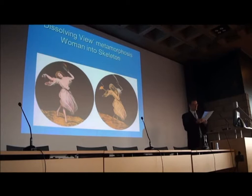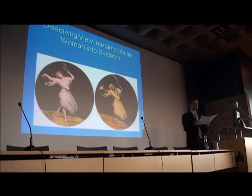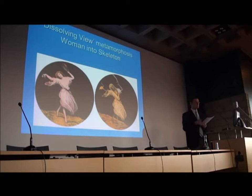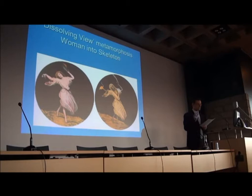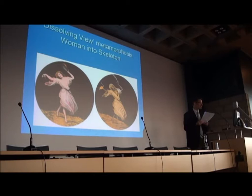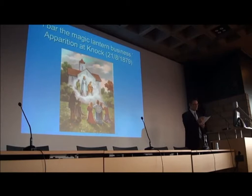An Irishman played a key part in facilitating the development of dissolving views: Edward Marmaduke Clarke, son of the man who assisted Paul de Philipstal when he first brought the Phantasmagoria to Dublin in 1804. It's likely that de Philipstal confided the technical secret of dissolving views to Marmaduke Clarke's father. The son then went on to invent the Biunial scope, especially created to display dissolving views by the new limelight gas, which became the standard mechanism for dissolving view effects in the mid-Victorian period.